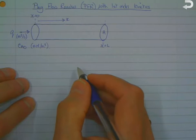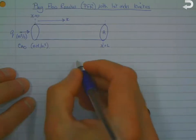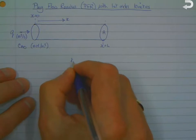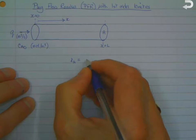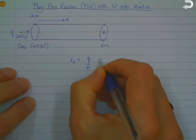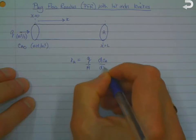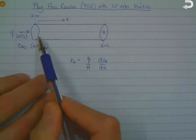The expression that was derived before was that RA, where RA is the reaction rate of our starting component A, is equal to Q over A times dCA by dx. So that's a variation of concentration along the length of the reactor.